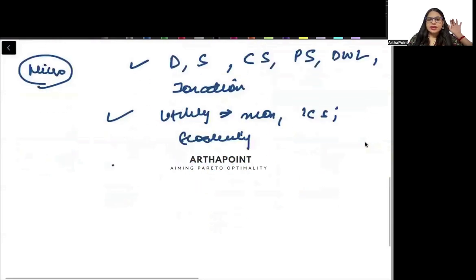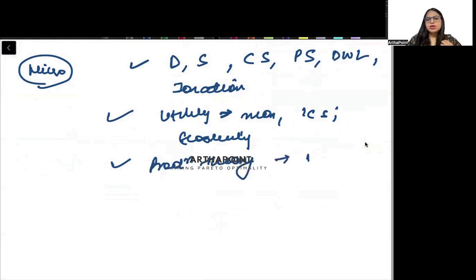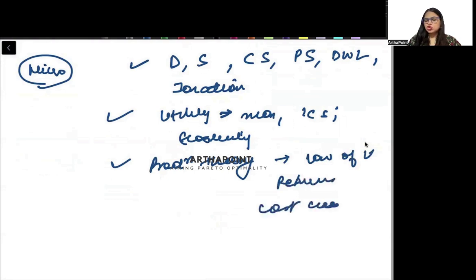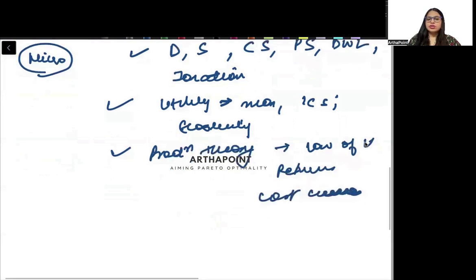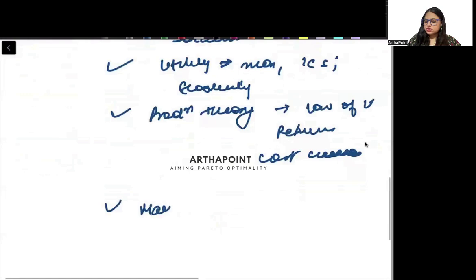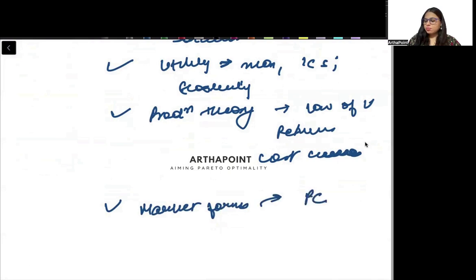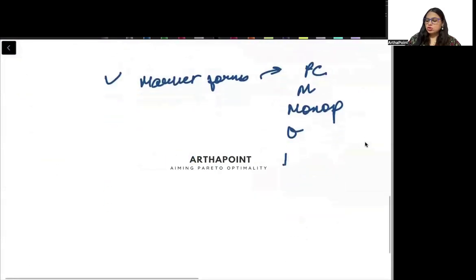Then you will do production theory. In production theory: law of variable proportion, law of returns to scale, and cost curves in short and long run. Then we will do market forms — in market forms, you will go ahead and do perfect competition, monopoly, monopolistic, oligopoly, and monopsony.